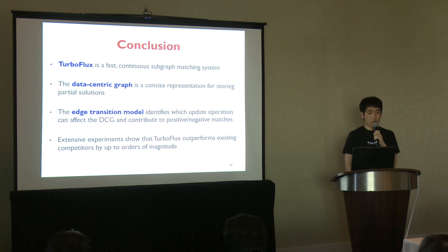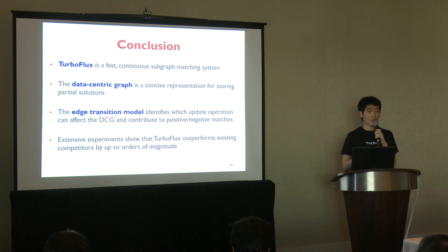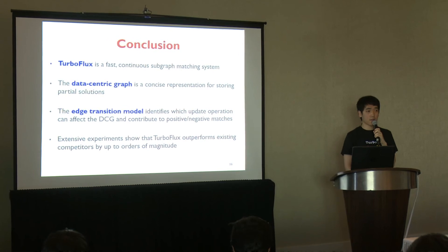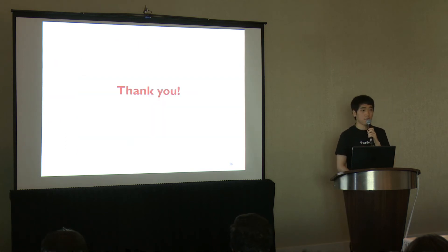To conclude, TurboFlux is a fast continuous subgraph matching system. We propose the DCG to store partial solutions very concisely. The edge transition model can identify which updates can modify the DCG and contribute to positive or negative matches. Finally, we showed that TurboFlux outperforms existing systems by orders of magnitude. These are the references for this presentation — thank you for listening.